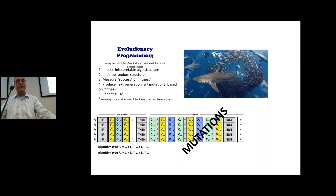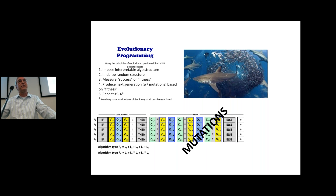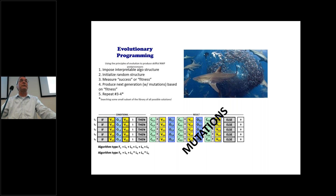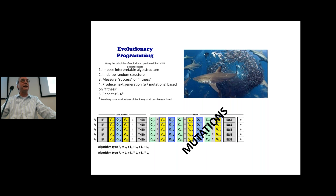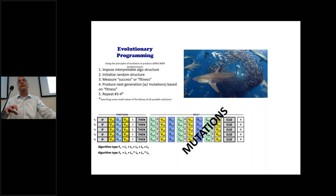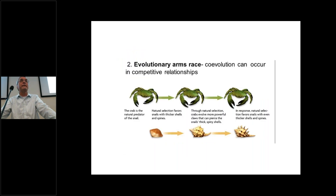You start with an initially random structure — the coefficients, variables, everything is random. Then you measure the success or fitness of each algorithm. All of them are really bad initially, but some are less bad than others, and those produce the next generation. Within about 20 generations you get algorithms competitive with multiple linear regression, and after that you get better solutions. You keep repeating that process until you reach a saturation point — the limit of predictability given the data you have.